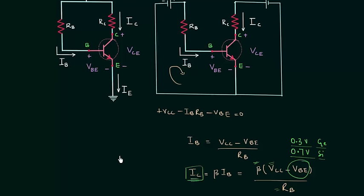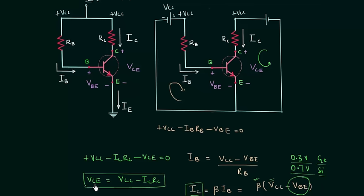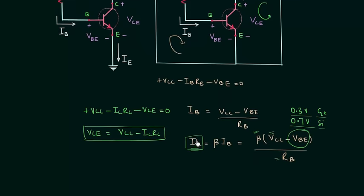Now we will calculate the output voltage Vce using Kirchhoff's voltage law in the output loop. We have: plus Vcc minus Ic·Rc minus Vce equal to 0. From this equation, Vce is simply equal to Vcc minus Ic·Rc. We have already calculated Ic, Vcc is known, and Rc is given, so we can easily calculate the output voltage Vce.